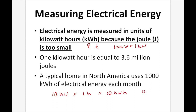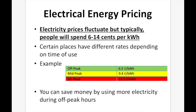If the electric company charges you $0.10 per kilowatt hour, you take your 10 kilowatt hours and multiply by $0.10 per kilowatt hour — that appliance costs $1 to use for that time. Electrical energy pricing. Electricity prices fluctuate, but typically people spend between 6 and 14 cents per kilowatt hour. Certain places have different rates depending on time of usage — off-peak, mid-peak, and on-peak — priced accordingly. Off-peak might be 6.5 cents, while on-peak usage is 13.2 cents. You can save money by using more electricity during off-peak hours.